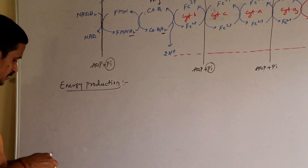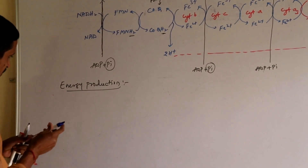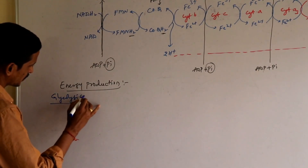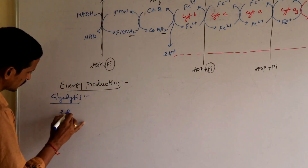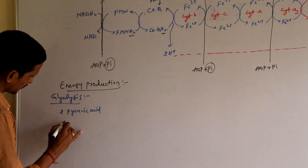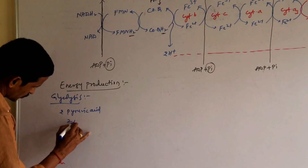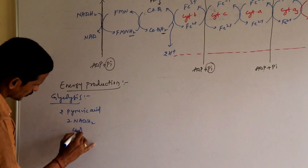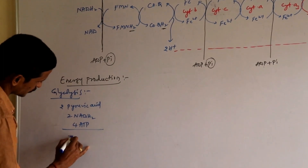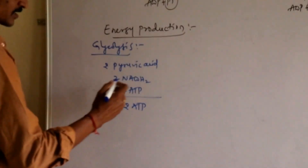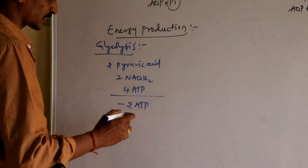So far we discussed glycolysis. The end products of glycolysis are 2 pyruvic acids, 2 NADH2, and 4 ATP. To initiate the process, 2 ATPs are consumed — let us deduct them at the end of the calculation.